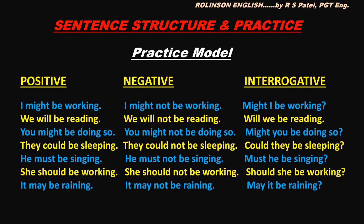In case of interrogatives, take the first word in the helping verb before the subject, write it at the beginning and put a question mark at the end: might I be working, will we be reading, might you be doing so, could they be sleeping, must he be singing, should she be working, may it be raining. This way you can continue exercising, making sentences and putting them in positive, negative and interrogative.